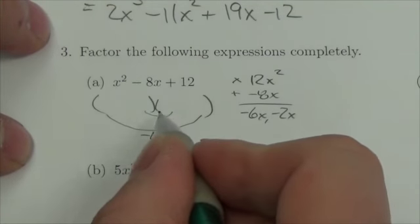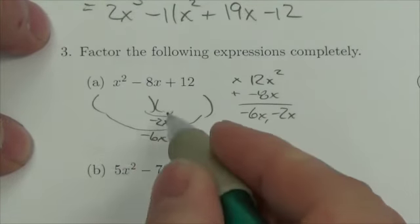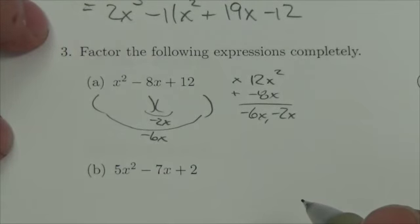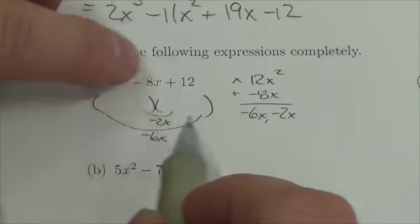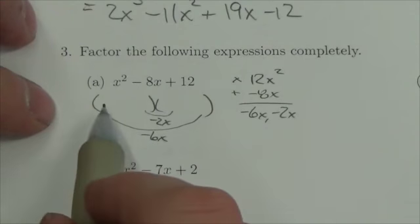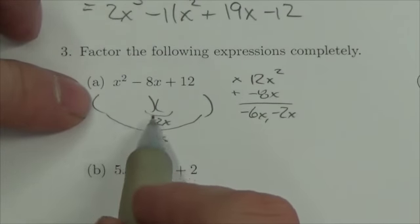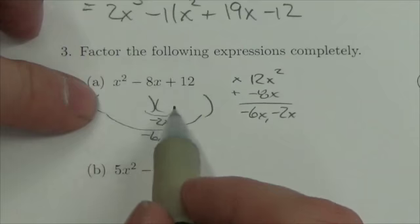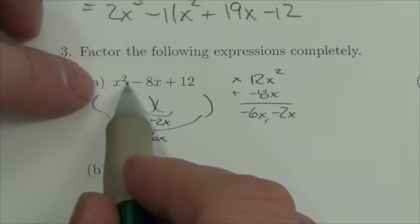This is going to be negative 6x, this is going to be negative 2x. I can put those in a different order if I wish, it doesn't matter. All that would do is change the order of my factors. That is going to be the product of those two terms and this is going to be the product of these two terms. The product of these first two terms has got to be x².